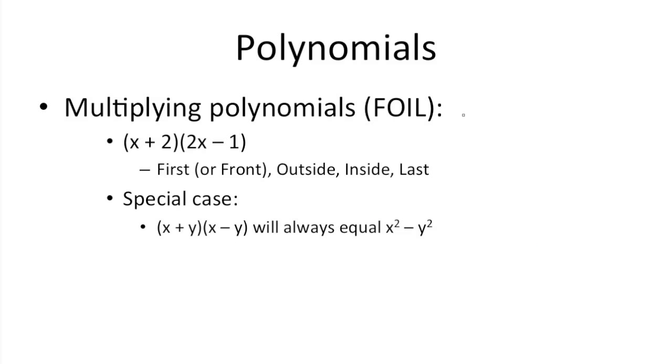So I'm sure you may have encountered this topic in class before, but you can multiply polynomials by following FOIL, which stands for first or front, outside, inside, and last. So what that means is you want to multiply the first terms together, x times 2x, then the outside terms, x times 1, then the inside, 2 times 2x, and then the last, 2 times 1.